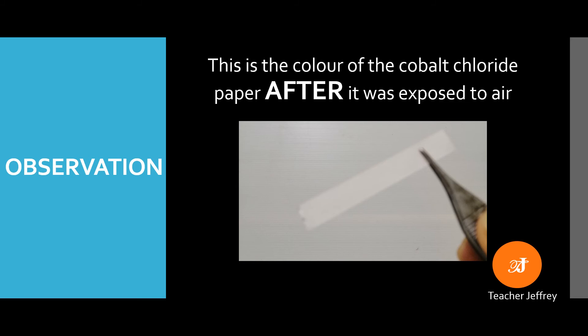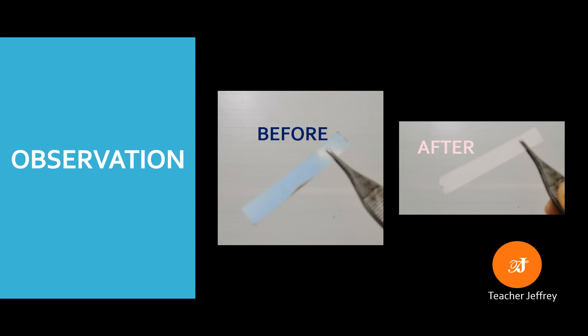What is the color of the cobalt chloride paper? The color of the cobalt chloride paper is pink. This is the color of the cobalt chloride paper before and after it was exposed to air and by blowing into it.